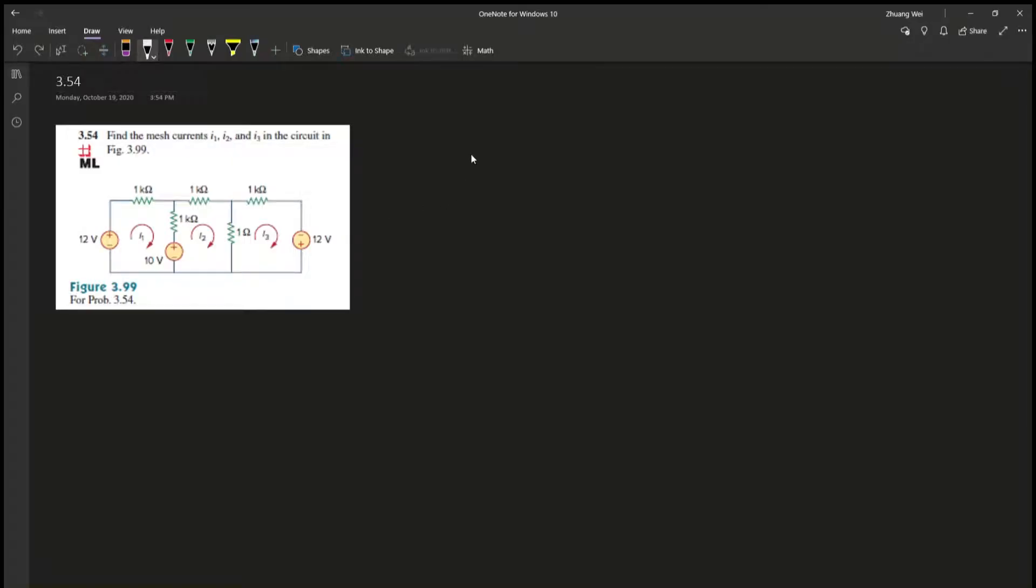Alright, for this question 3.54 here it says find the mesh current i1, i2, and i3 in the circuit. Okay, so this one is a little complicated because it has three mesh currents, but it just means that there's three unknowns and you will have three equations because there's three loops.